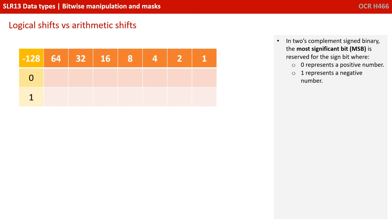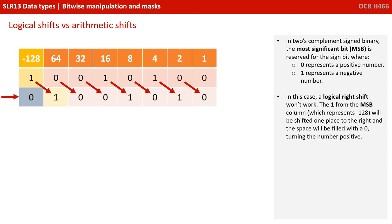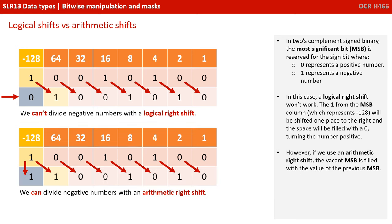In 2's complement signed binary, the most significant bit is reserved as the sign bit, where 0 represents a positive number and 1 represents a negative number. In this situation, a logical right shift is no use, as the 1 from the most significant bit column — which represents minus 128 — gets shifted one place to the right and the space left behind gets padded with a 0, thus suddenly turning the number positive. However, if we use an arithmetic right shift instead of a logical one, the vacant MSB is filled with the value previously held in the MSB, so the 1 is retained. We can't divide negative numbers with a logical shift, but we can divide negative numbers with an arithmetic right shift.